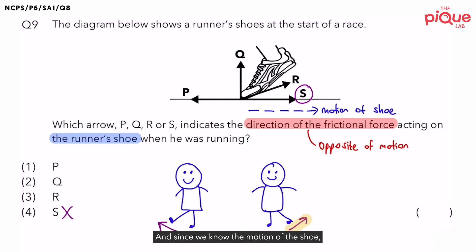And since we know the motion of the shoe, finding out the frictional force will be much simpler. So, if the motion of the shoe is towards the right, can the direction of frictional force also be towards the right? No. That's why S is definitely wrong. Instead, what's the opposite of the right? Frictional force must be acting towards the left-hand side.